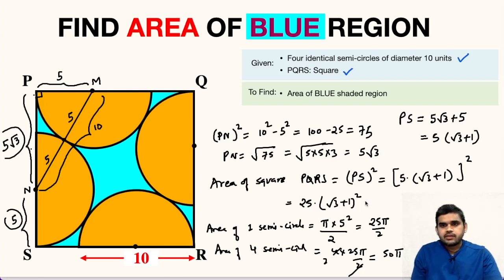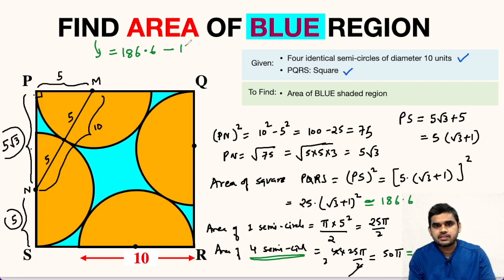Now using calculator, we can find this 25 multiplied with root 3 plus 1 whole square. So this will be 186.6 approximately equal to, and this 50 pi will be equal to approximately 157.1. This is the area of blue region. This is the area of 4 semicircles. So the area of blue region will be equal to area of square, that is 186.6, minus area of the 4 semicircles which is 157.1. So this will give us 29.5 square units. So the area of this blue shaded region will be 29.5 square units.